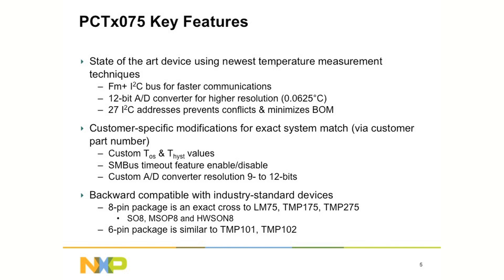The A-to-D conversion can be programmed to different resolutions to decrease measurement time and power consumption. A value for the two alarm values, TOS and THYST (T-hysteresis), can be custom-programmed at the factory to exactly match system requirements, eliminating programming at startup and making an optimum system solution.